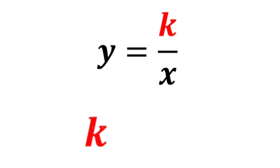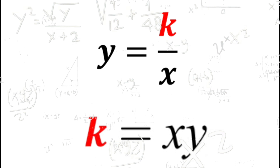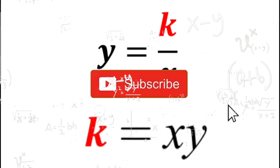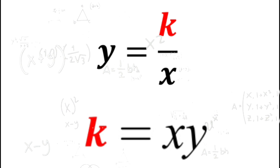Rearranging gives us k equals x times y. That wraps up the definition, real-life examples, and general equation of inverse variation. If you find this video helpful, hit like and subscribe for more math videos. See you!